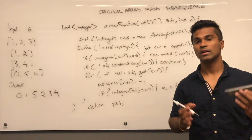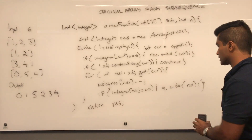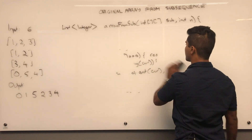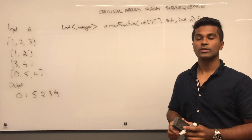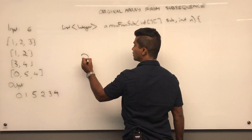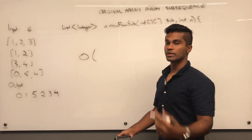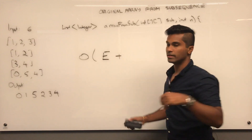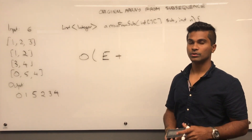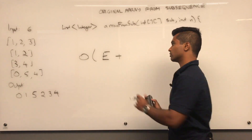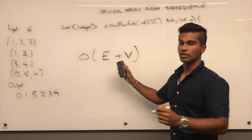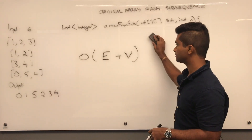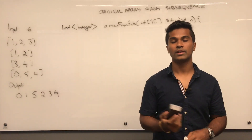The runtime complexity is O(E + V): we process every edge E when building the map, and visit every node V to check in-degrees and run the BFS. So O(E + V) is the overall runtime for this algorithm. That's pretty much how you solve it — thanks for watching.